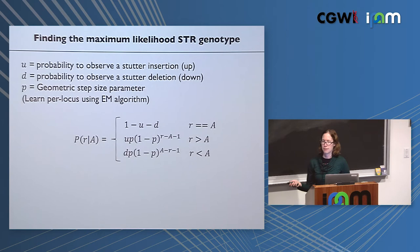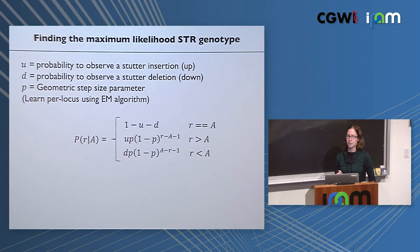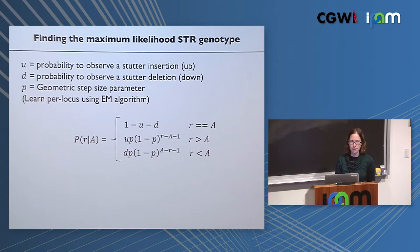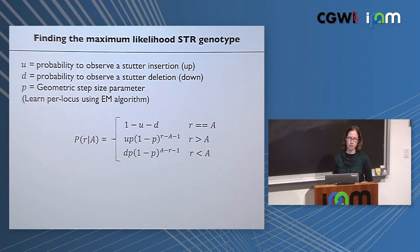These parameters vary by locus — we actually learn them per locus using an EM algorithm, iterating between estimating genotype likelihoods and estimating the stutter model until convergence. The main factors affecting stutter are the length of the motif — homopolymers and dinucleotides have a lot of stutter, whereas hexanucleotides are pretty fixed — and the total length of the repeat, since longer repeats have more opportunities to mutate. Stutter noise is roughly linear with total repeat length.